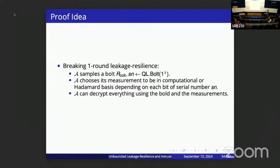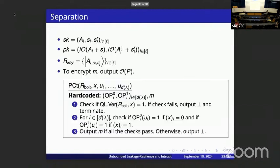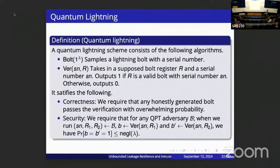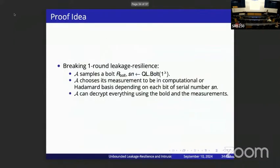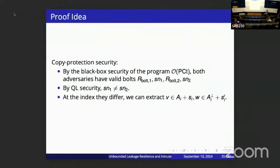One of our other results is that copy protection does not imply even one round of adaptive leakage resilience. To show this, we rely on so-called quantum lightning states, where anyone can create an unclonable state but even if they create their own state they cannot create two copies of the same state. We crucially rely on the leakage adversary creating such a state on its side, and in the reduction we won't be able to copy the state to create a copy protection adversary. This gives us a separation between copy protection and leakage resilience.